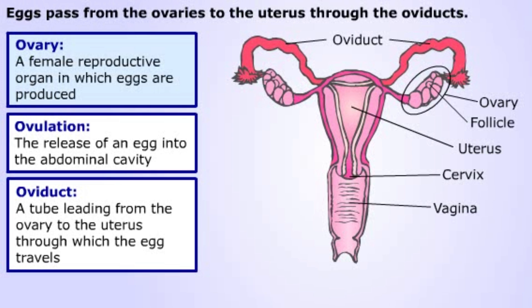The egg moves down the oviduct guided by muscular contractions or the movement of cilia lining the oviduct. The two oviducts join the uterus, which connects to the vagina. In most non-human vertebrates, the oviduct joins to a common opening that serves for excretion as well as reproduction.